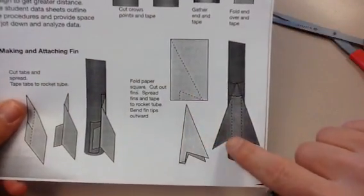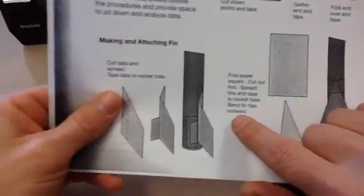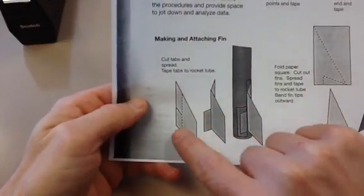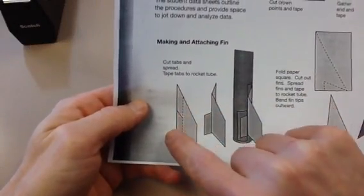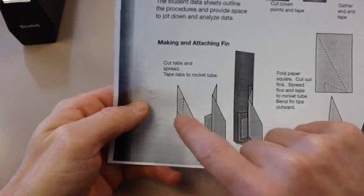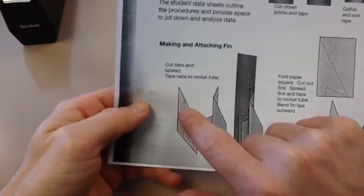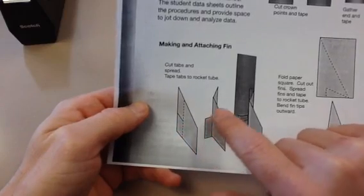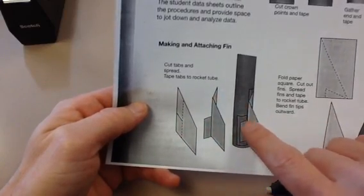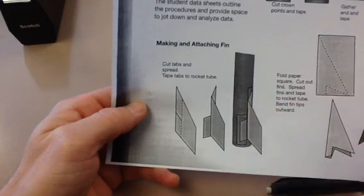This is what I did for my fin, and I'm going to tape that on the rocket body in a moment. But here's another option. You can cut out a fin shape, and you see these lines. You can just cut right there on that line and fold them. Fold one that way, fold it that way, and then you can tape them on. So that's an option, too.